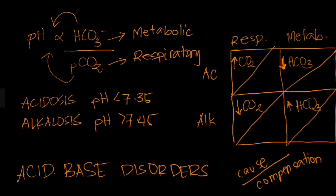So now you have the various causes of each type of disorder. Let us go to compensation. The principle of compensation is that if there is a shift in bicarbonate or in PCO2, it would be the other parameter that tries to compensate. For example, in respiratory acidosis the cause is CO2, so what compensates is bicarbonate. Since the pH is decreased, bicarbonate should increase to bring the pH back to normal.